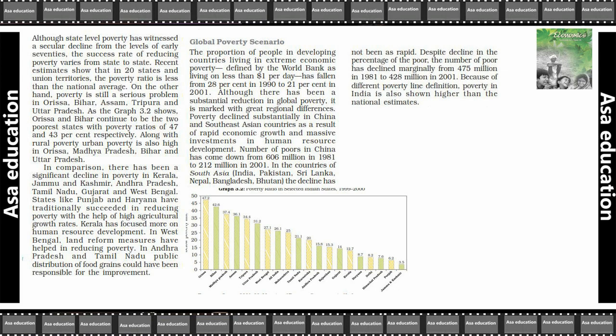Along with rural poverty, urban poverty is also high in Orissa, Madhya Pradesh, Bihar and Uttar Pradesh.